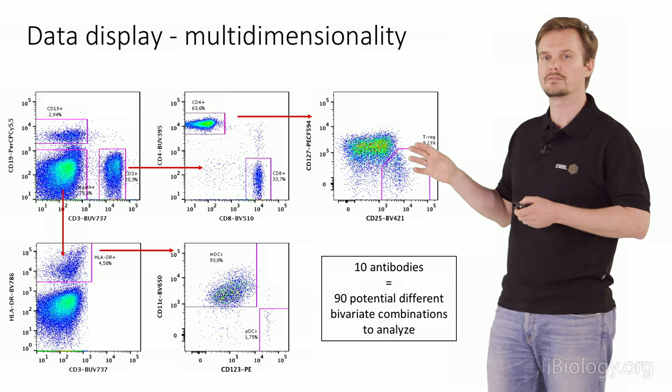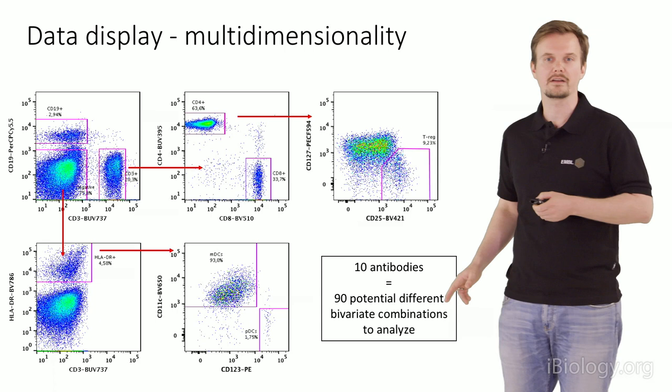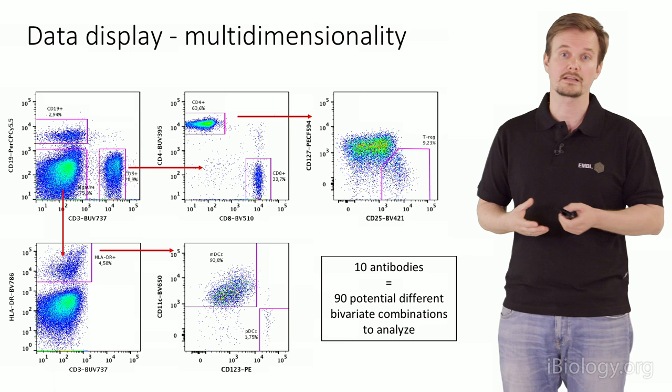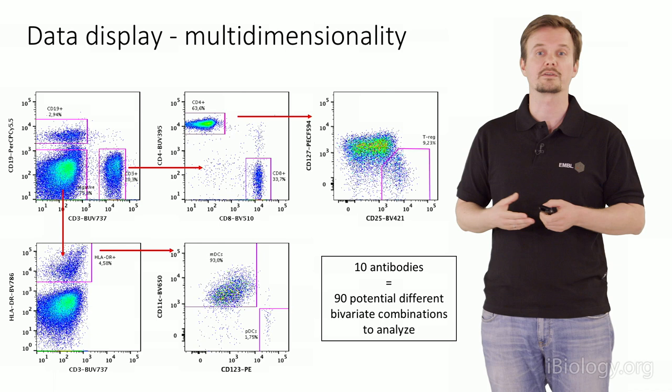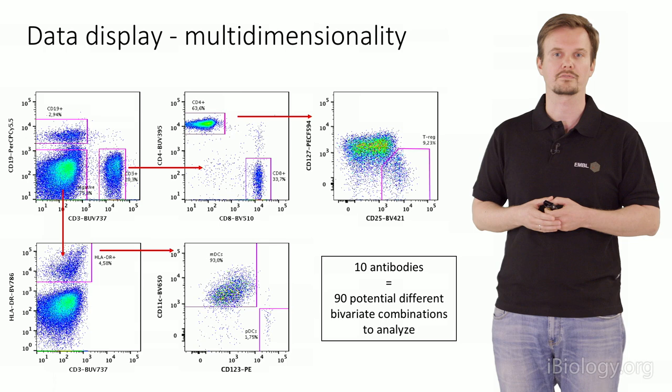Just to think about scale: with 10 antibodies, we can already calculate more than 90 potentially different bivariate plots. And beyond bivariate plots, we could look at all markers simultaneously for a completely unsupervised, unclustered analysis. This is where flow cytometry is heading — becoming more and more like the genomics and proteomics fields, where huge amounts of data in different specificities and channels are analyzed together. Multidimensionality is there, and we have to deal with it.